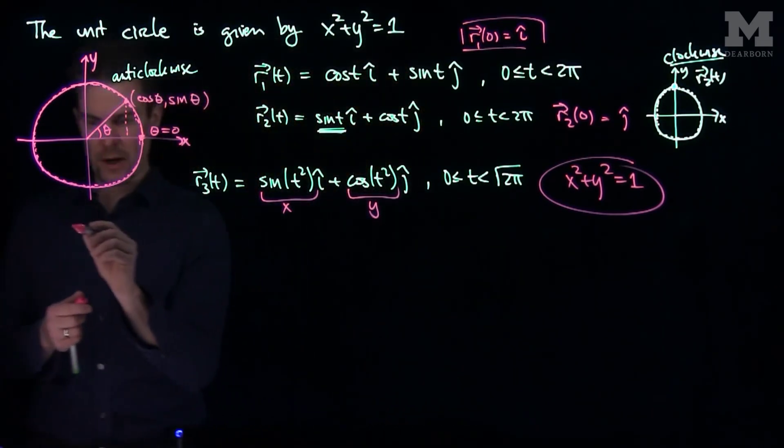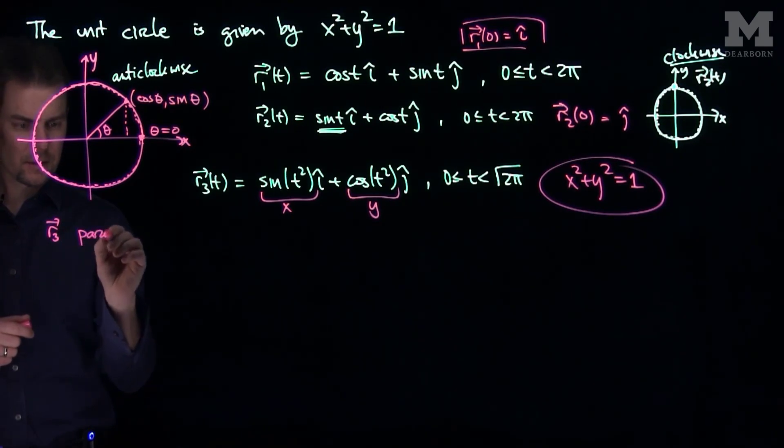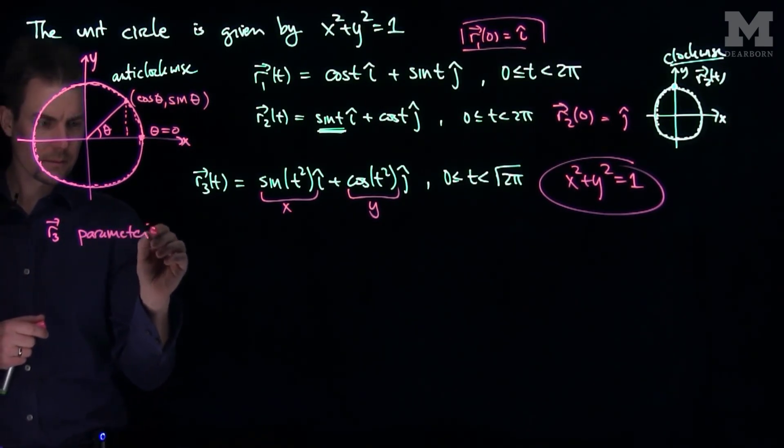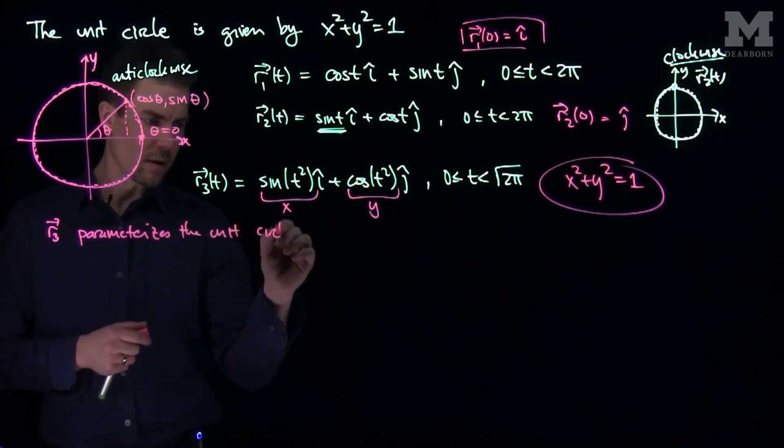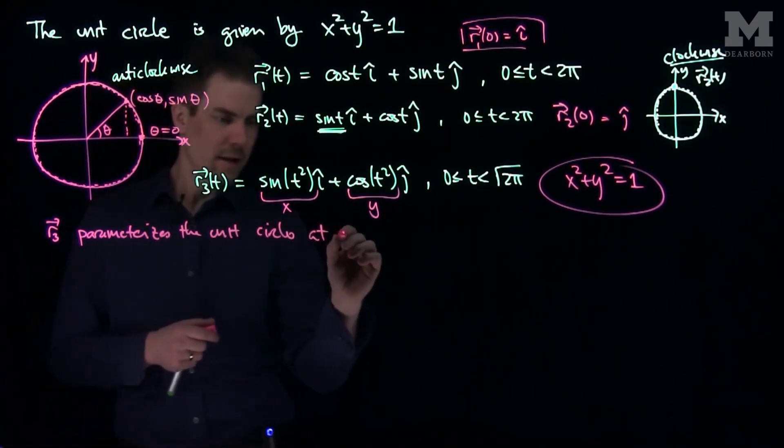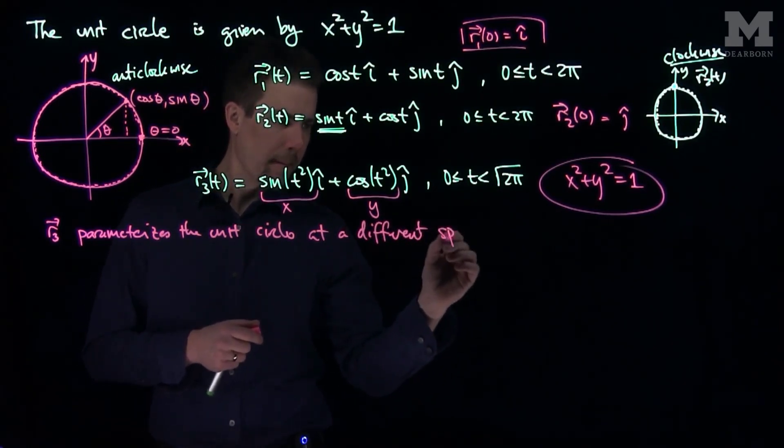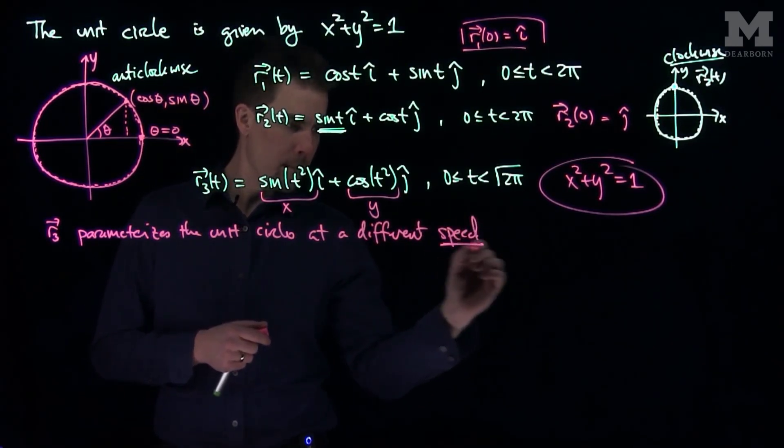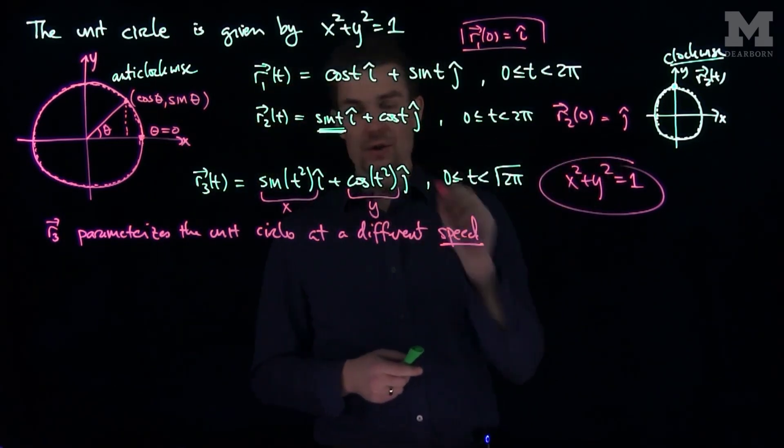So this parameterizes, so r3 parameterizes the unit circle at a different speed, and it will have the same orientation as r2.